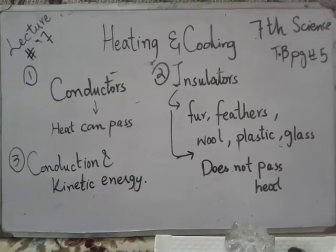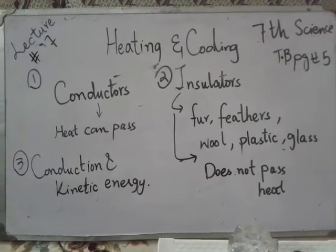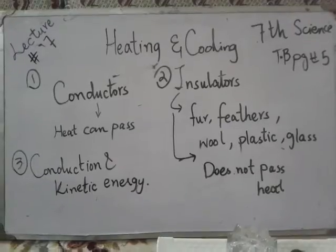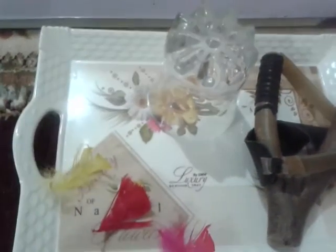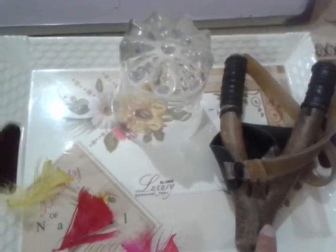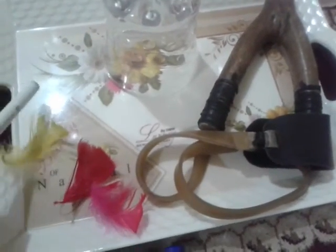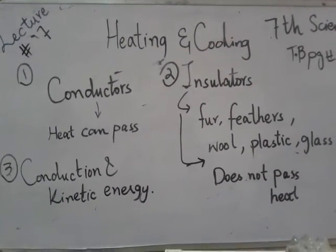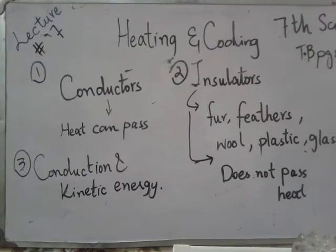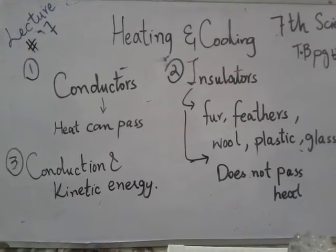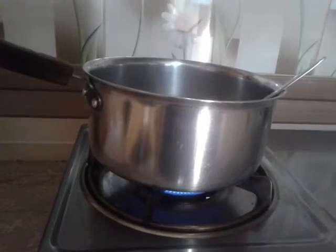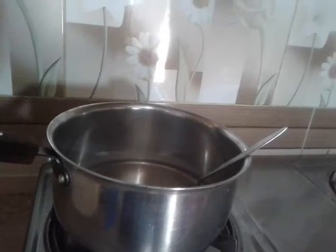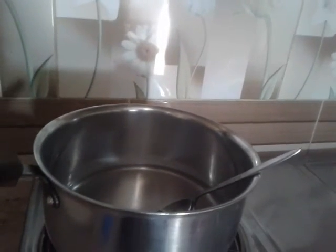Now I will explain insulators. Non-metals such as glass, feathers, wood, rubber, plastic, wool, and fur are examples of insulators. Heat cannot pass through insulators. Now I am putting this metal spoon into the saucepan.